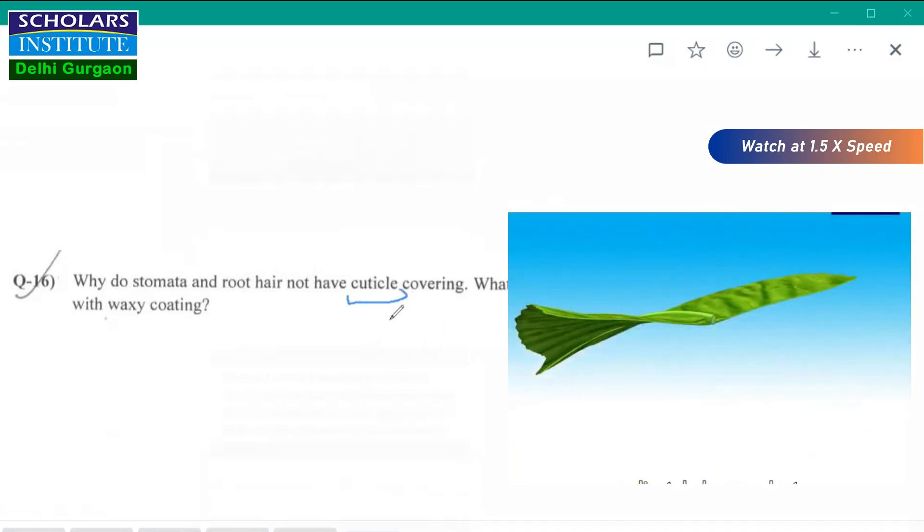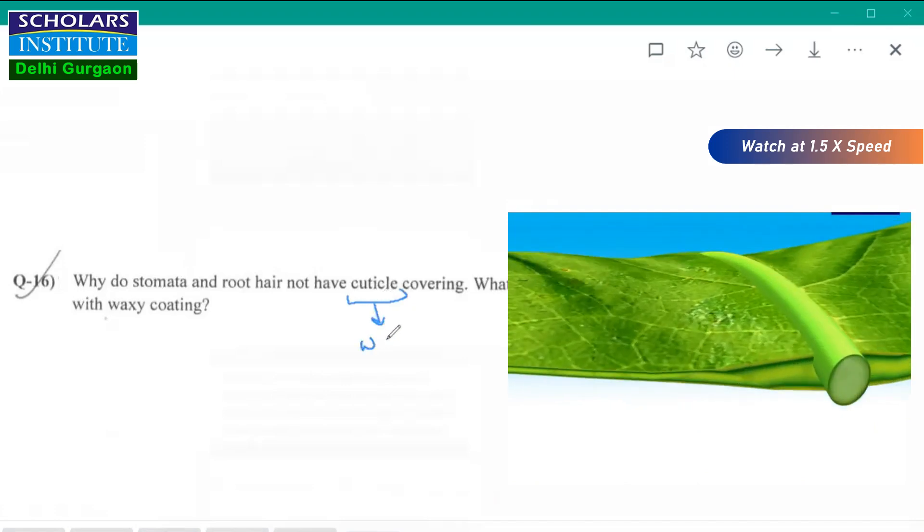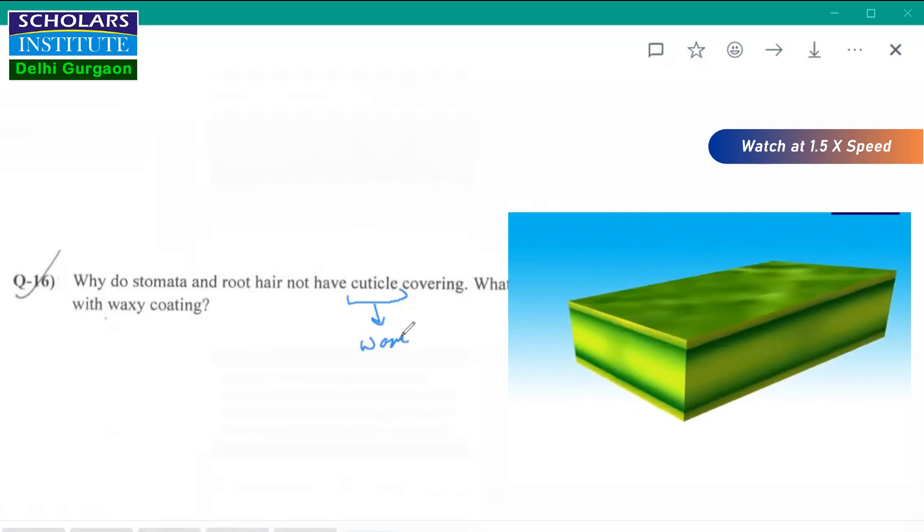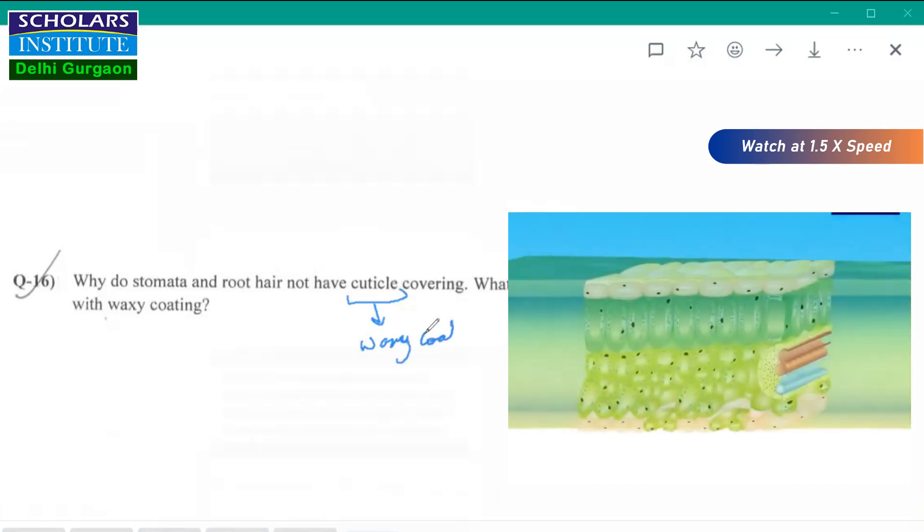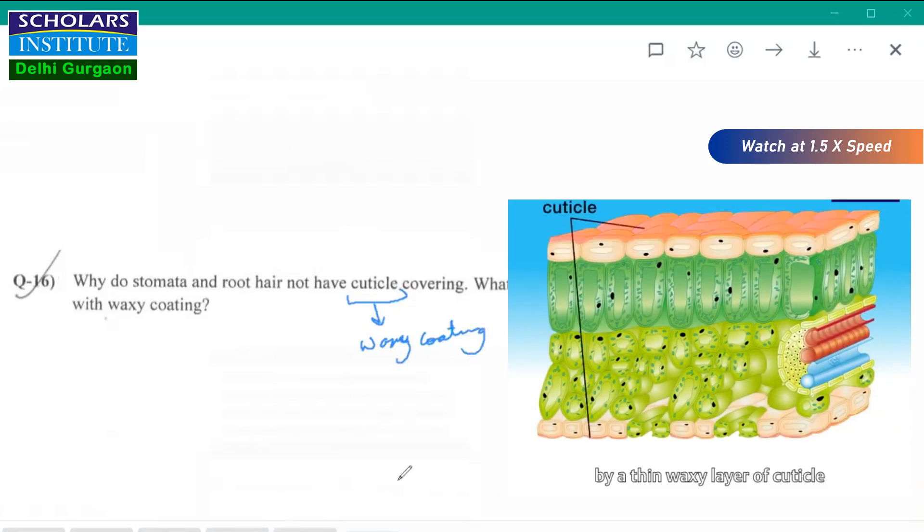Now what is cuticle? First we have to understand this thing. Cuticle is a waxy coating which is present on the outer layer of the cells of the plant.